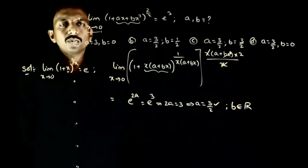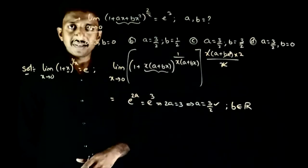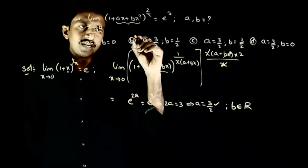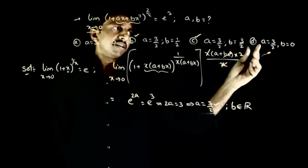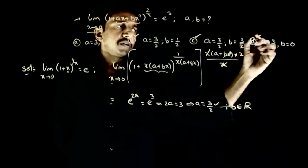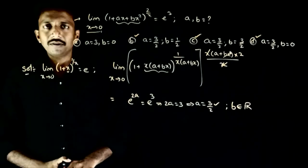So what are the possible options here. So a equal to 3 galath hai, A equal to 3 hai to e power 6 a jae ga. A is equal to 3 by 2, B is equal to half is ok. A equal to 3 by 2, B equal to 3 by 2 is also ok. A is equal to 3 by 2, B is equal to 0 is also ok. So options b, c and d are the right options. Thank you.